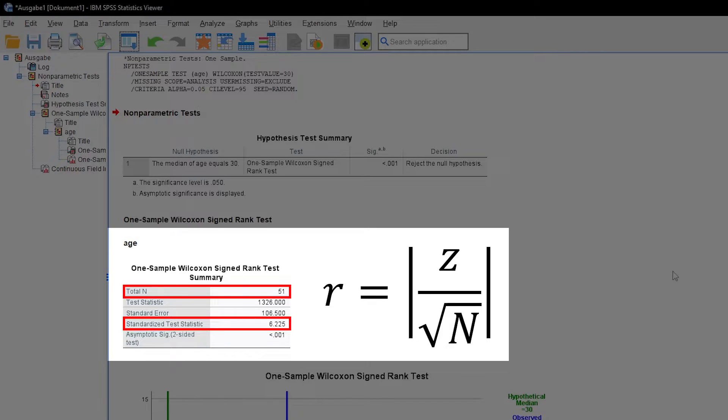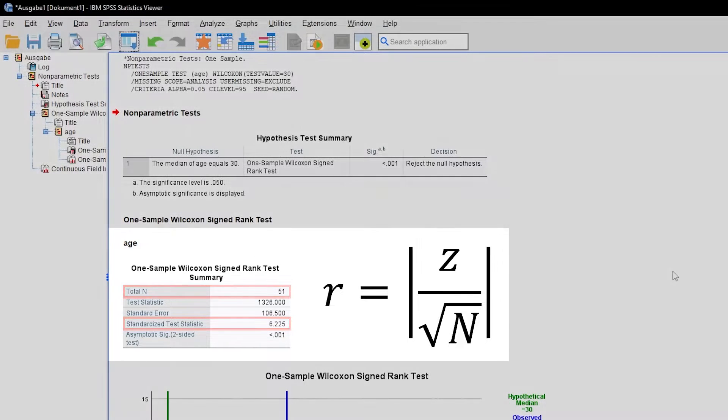In my example, I have to divide 6.225 by the square root of 51. I can either do the calculation in Excel, Google Sheets, or use the calculator.